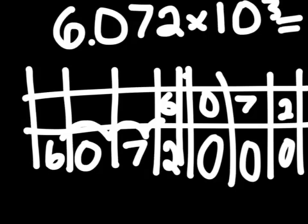Hi everybody, today I'm going to help you solve the problem 6.072 × 10³. First you line up your number in the chart.